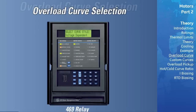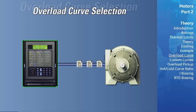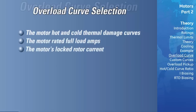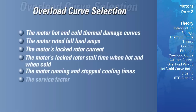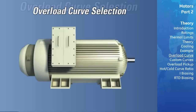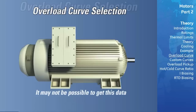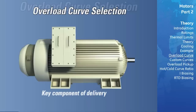Now that you understand motor thermal modeling, we will go into the relay settings. The first step is to obtain accurate motor data from the motor supplier. This data must include: the motor hot and cold thermal damage curves, rated full load amps, locked rotor current, locked rotor stall time when hot and cold, running and stopped cooling times, service factor, and motor thermal rise and class of insulation. On many large custom motors, this data may not be supplied unless requested, and once the motor has been shipped, it may not be possible to get it. It is therefore critical that the customer makes clear to the motor supplier the expectation of complete and accurate motor data being shipped with the motor.